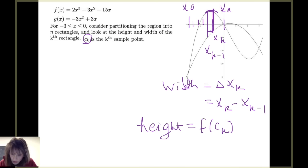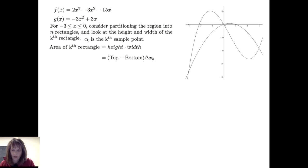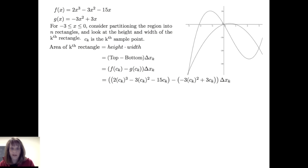The height goes from the top function f down to the bottom curve g, evaluated at the sample point c sub k, and the width is delta x sub k. Therefore, the area of the kth rectangle is height times width: f evaluated at c sub k minus g evaluated at c sub k, times delta x sub k. Plugging c sub k into f gives 2(c sub k)³ minus 3(c sub k)² minus 15(c sub k), and we subtract off g evaluated at c sub k, then multiply by the width.